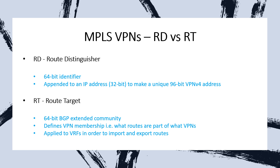The RT, or Route Target, is a BGP extended community. It's also a 64-bit number that we configure on our routers running MPLS. It defines VPN membership — that is, which routes are part of which VPNs. This community tag is applied to VRFs in order to import and export routes from different sites.